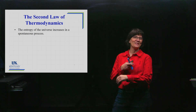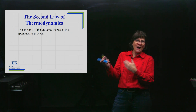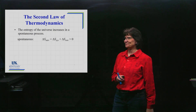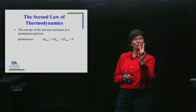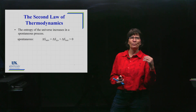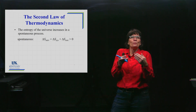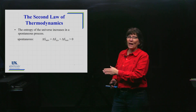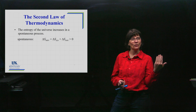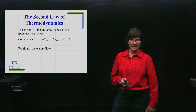That might seem impossible — how can you know the delta S of the universe when freezing an ice cube at home? But it's not that hard. The universe is two things: the system (the process taking place — water freezing, sodium reacting with water, diamond turning into graphite) and the surroundings (everything else). If delta S of the universe is greater than zero, the process will be spontaneous. That is a perfect predictor with no exceptions.